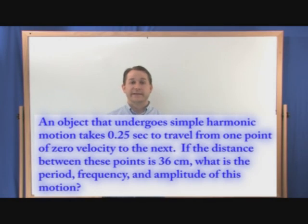An object undergoing simple harmonic motion takes 0.25 seconds to travel from one point of zero velocity to the next. If the distance between the points is 36 centimeters, calculate the period, the frequency, and the amplitude of this motion.